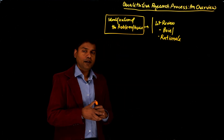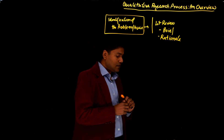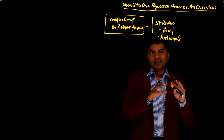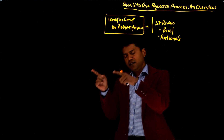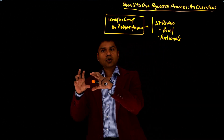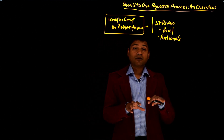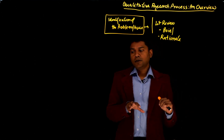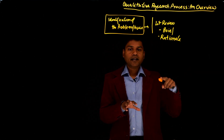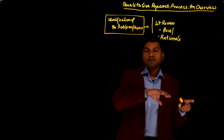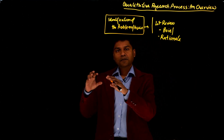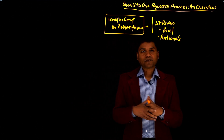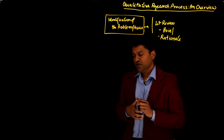What happens after you have collected the data and start analyzing it? At that point, you come back and do a thorough literature review, because you have already collected the data so there is no chance of being biased. During the data analysis process, you do another round of literature review to understand the phenomenon in its depth. That's the idea behind the brief literature review at the start.